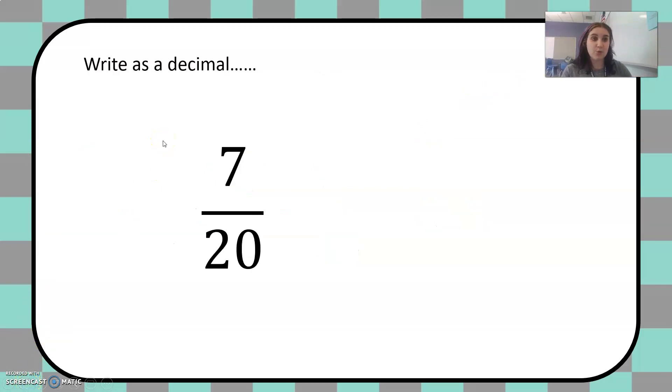Seven over 20, seven-twentieths. See if you can write this as a decimal.